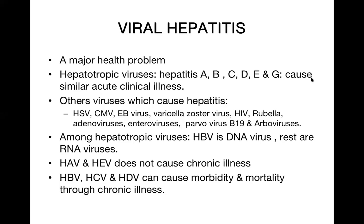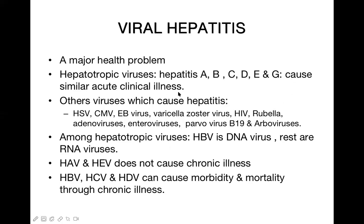There is a common belief in the general population that once hepatitis B enters the body there is no cure. Viral hepatitis is caused by mainly hepatotropic viruses: hepatitis A, B, C, D, E, and G. They all cause similar types of acute illness including fever, pain in the right hypochondriac area, jaundice, nausea, vomiting, and anorexia.